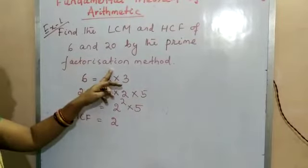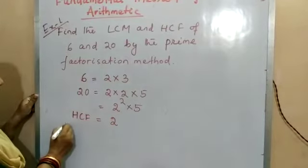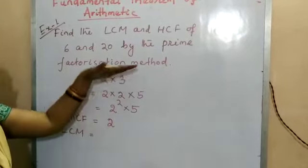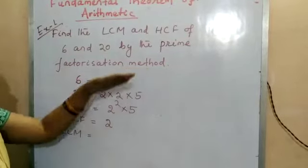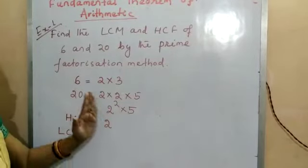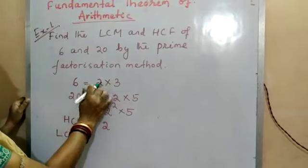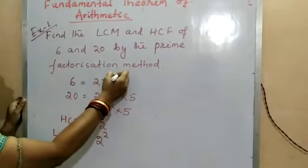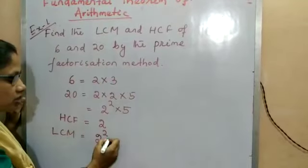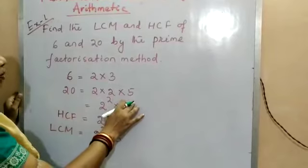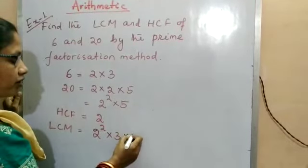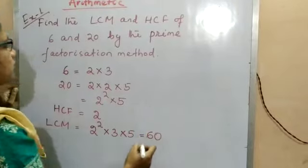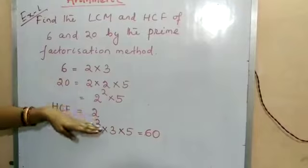Now find LCM. LCM is the product of the highest powers of all prime factors present in the numbers. Here 2 has power 1 in 6 and power 2 in 20, so we take 2². Here 3 has power 1 in 6 and power 0 in 20, so we take 3. Here 5 has power 1 in 20 and power 0 in 6, so we take 5. So LCM = 4 × 3 × 5 = 60. Therefore HCF is 2 and LCM is 60.